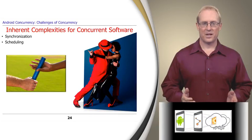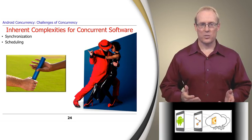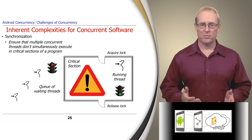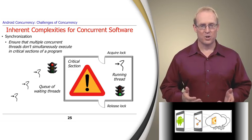Some common inherent complexities of concurrent software relate to synchronization and scheduling, which deal with the order and/or time in which operations are performed. Synchronization ensures that multiple concurrent threads don't execute critical sections of a program at the same time and thus corrupt shared resources.